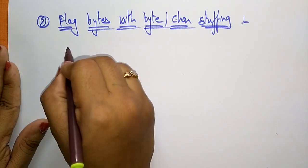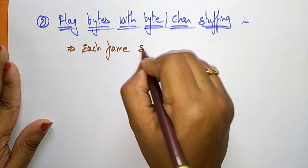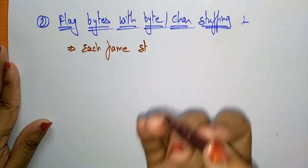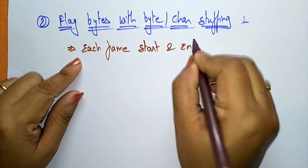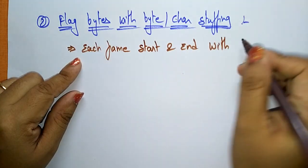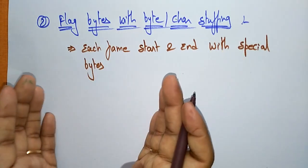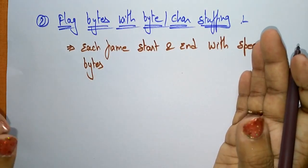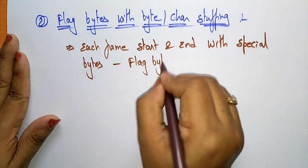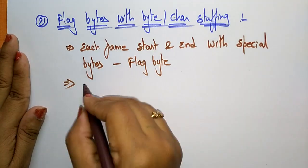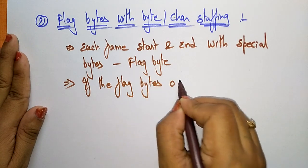Each frame — meaning the packet that we receive from the network layer — has to be converted into a frame by the data link layer. Each frame starts and ends with special bytes. The starting and ending of each frame includes a special byte called the flag byte.